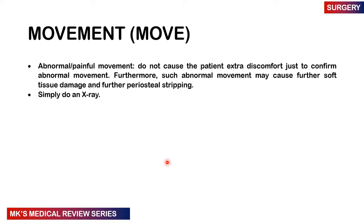Then comes movement — so the local examination sequence is look (inspection), feel (palpation), and move. Do not cause the patient any unnecessary stress — abnormal movement causes further soft tissue damage and periosteal stripping. Just do an X-ray.